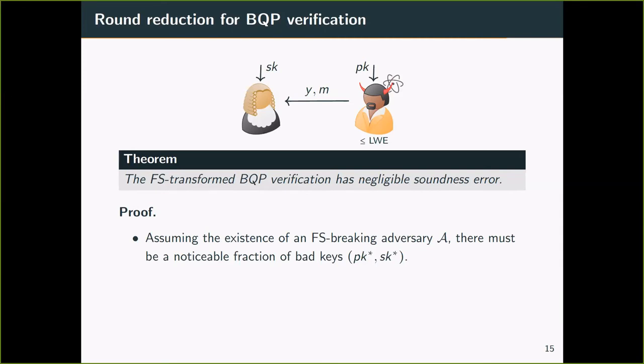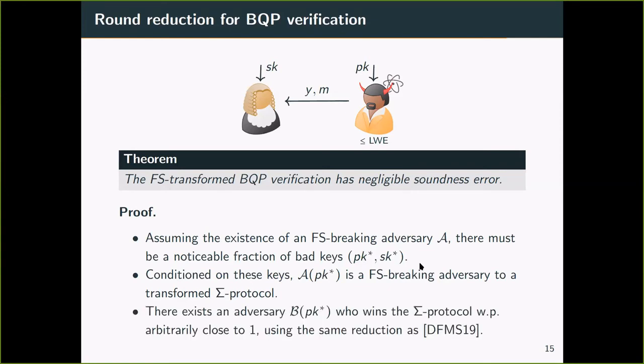We show that the Fiat-Shamir transformation of the verification protocol has a negligible soundness error. The proof idea is as follows, assuming there exists an adversary A who breaks the transformed protocol. That means that there must be a noticeable fraction of bad keys with which the adversary wins the protocol with non-negligible probabilities. Then by the same reduction as the paper by Dong, Fehr, Majenz, and Schaffner, there exists an adversary B who wins the three-message protocol with probability arbitrarily close to one. By the soundness guarantee of the three-message protocol, we get a contradiction.